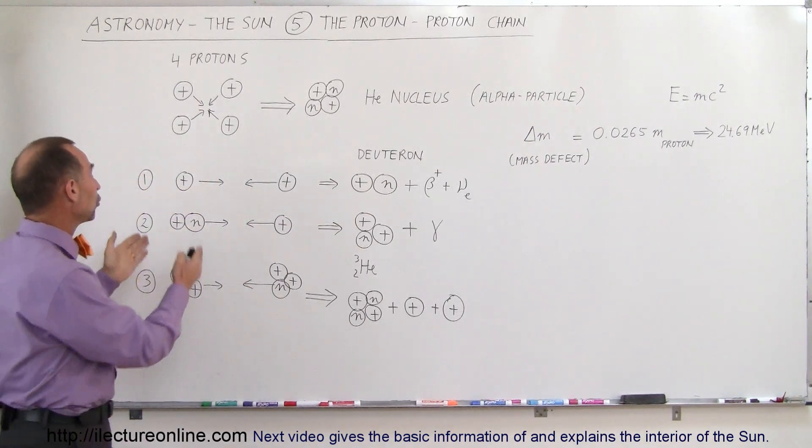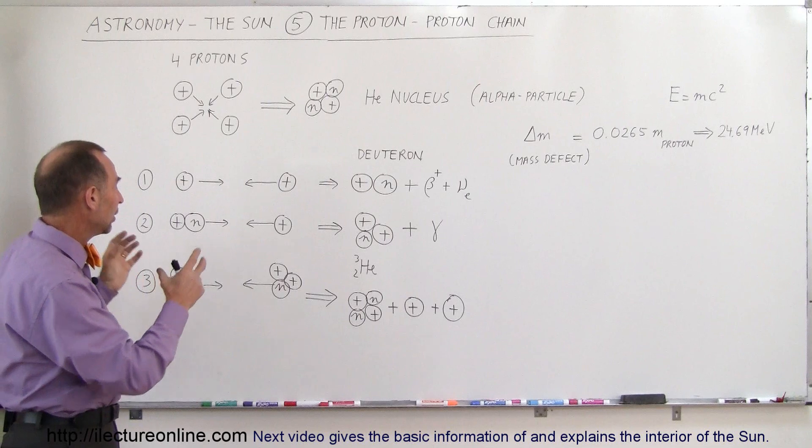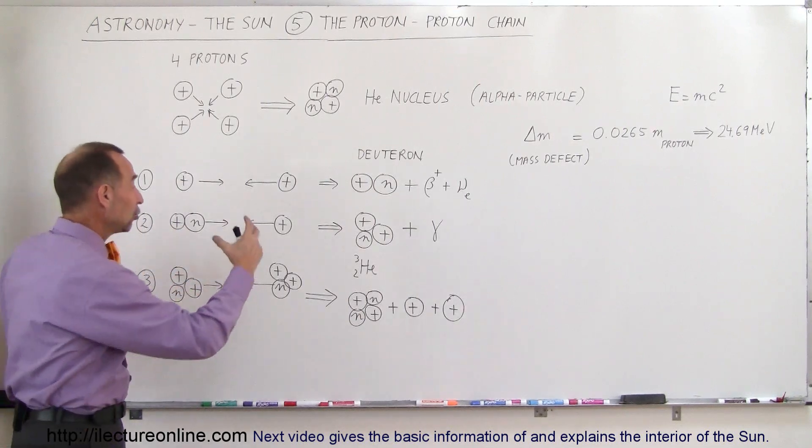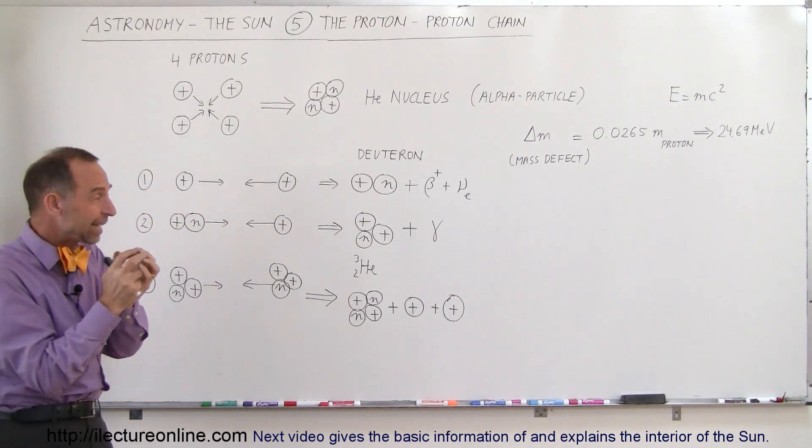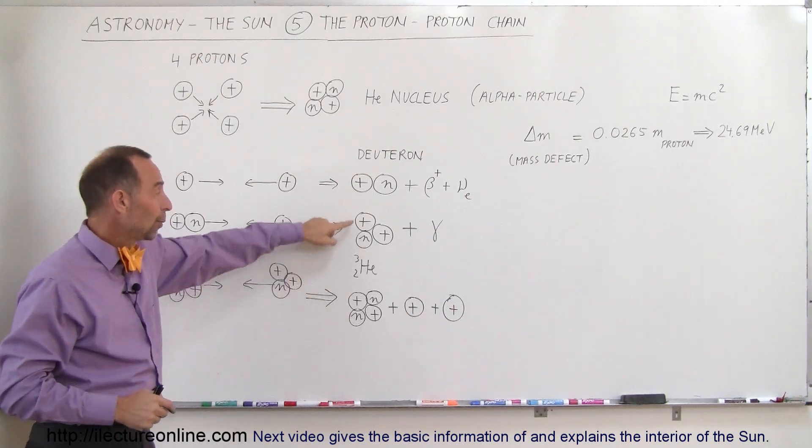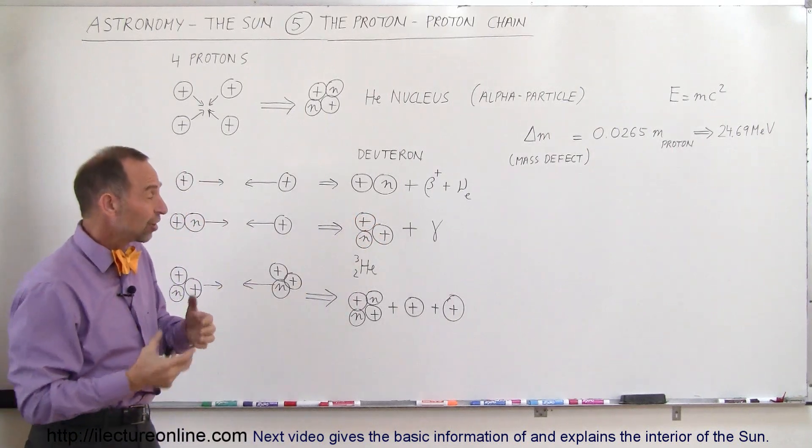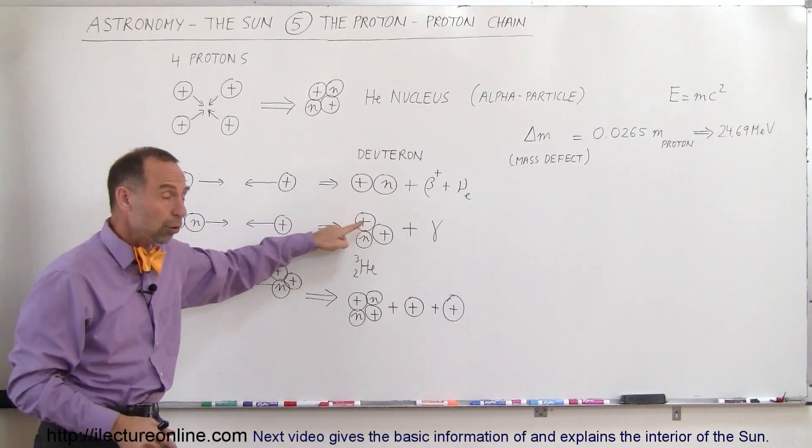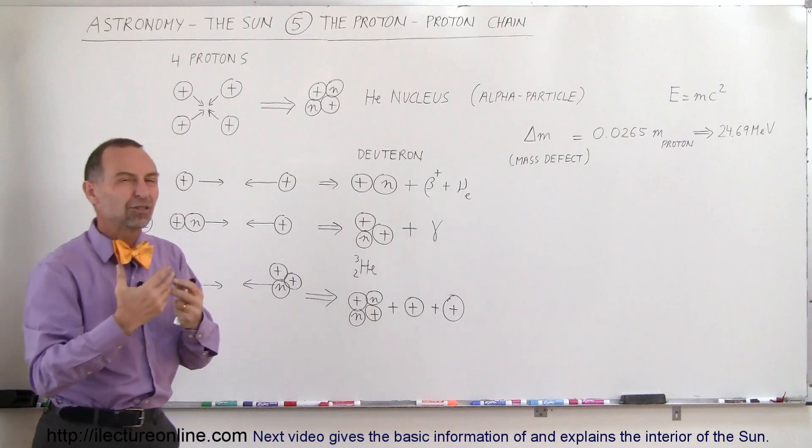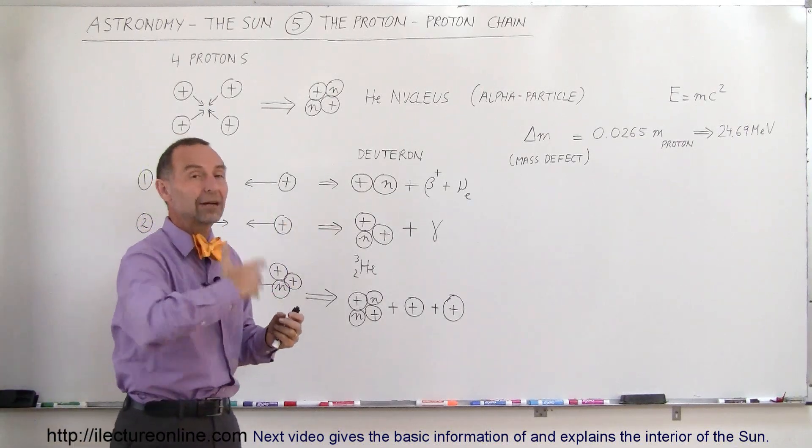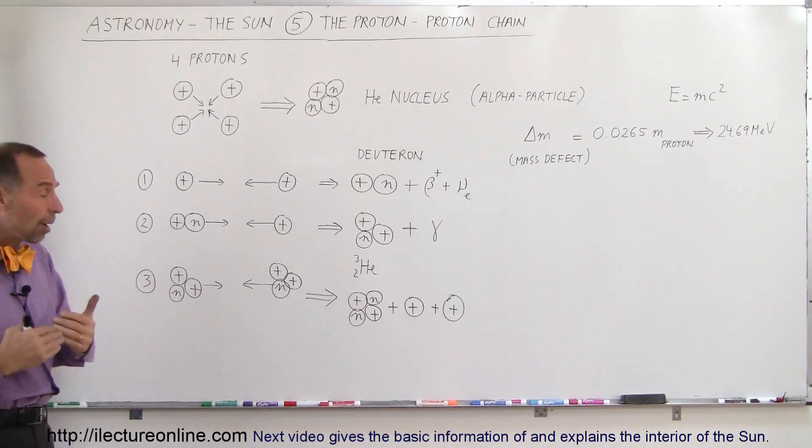The next step in the process is one of those deuterons then slams into another proton and forms helium-3. Again, a high enough temperature is required to get the two positive particles to slam together with a high enough velocity so they'll stick together, and the nuclear strong force will hold them together. In the process, what we have now is two protons and one neutron together, forming helium-3, which is a helium isotope which has two protons but only one neutron. In the process, also a very high-energy gamma ray, which is basically a very high-energy photon, is ejected as well, carrying off some of the energy generated in the nuclear reaction.